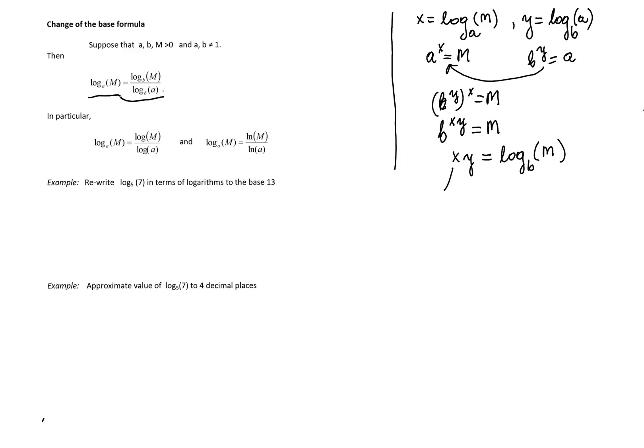But X was logarithm to the base A of M, and Y was logarithm to the base B of A. To get the formula, we just need to divide this equality by logarithm to the base B of A.